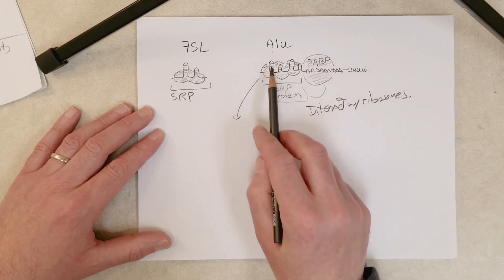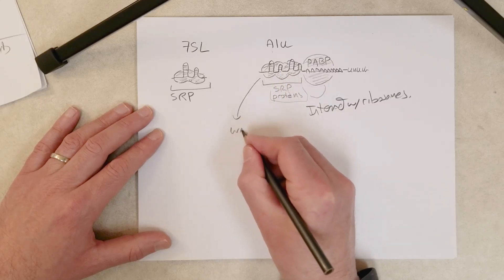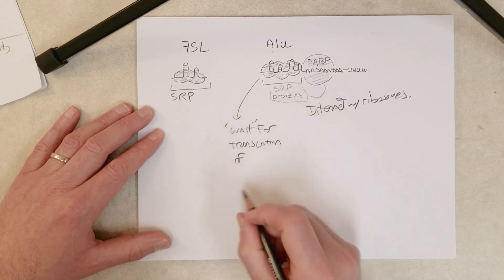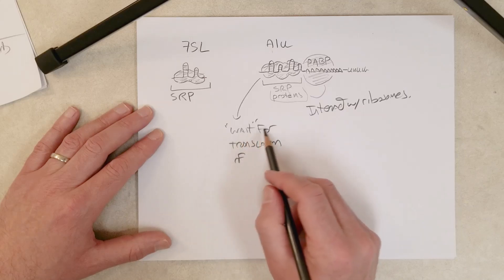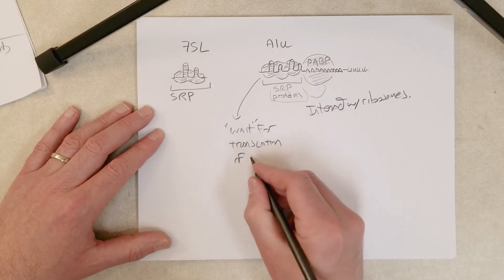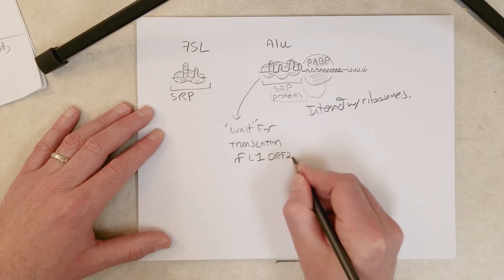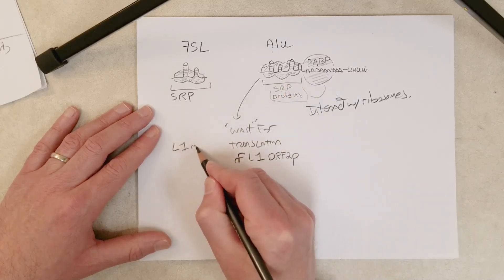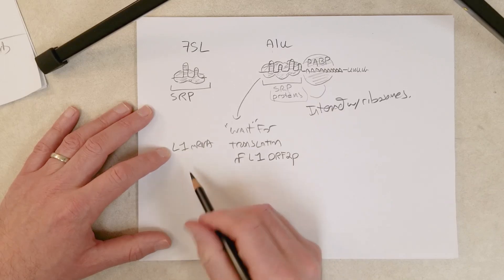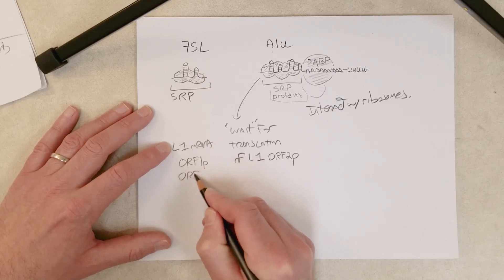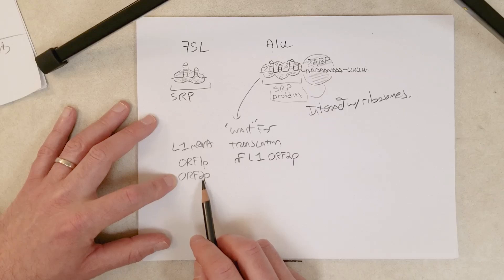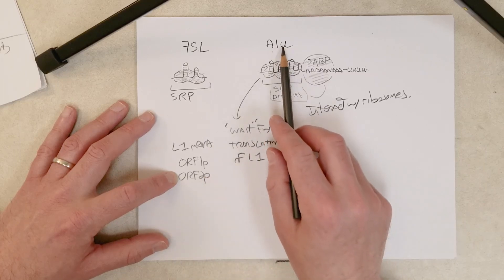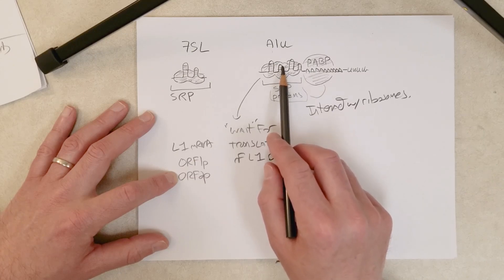When ALU is near the ribosome, it can wait for translation. It's just an RNA molecule, it's just kind of there, and it's in the right place at the right time because if it sits there long enough, eventually the L1 protein ORF2P will be translated. This is near the ribosome that is translating the L1 messenger RNA which encodes ORF1P and ORF2P, the reverse transcriptase. Once it's translated, it binds that ALU RNA that's right near the ribosome.